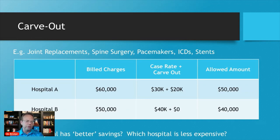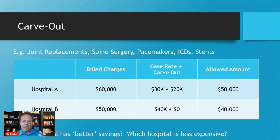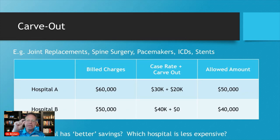Let's say this is a spine surgery. At hospital A, they'll have billed charges of a total knee replacement of $60,000. They have negotiated a case rate of $30,000 for the overall surgery itself — for the OR, for the nurse's time, for the lights, for everything. But hospital A has also negotiated a carve-out for $20,000 for the implant itself. So the total reimbursement is the $30,000 case rate plus the $20,000 carve-out, or $50,000 total.